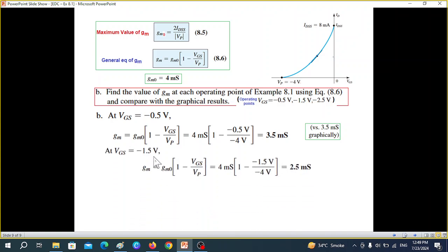Then a second point, minus 1.5. Again, we just plug in the value 1.5 here. The GM is 2.5 milli Siemens now. And in the graph, we found 2.57 milli Siemens.